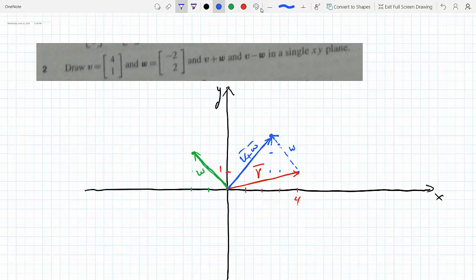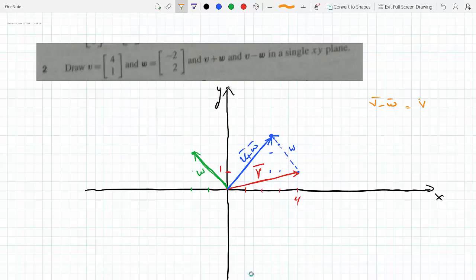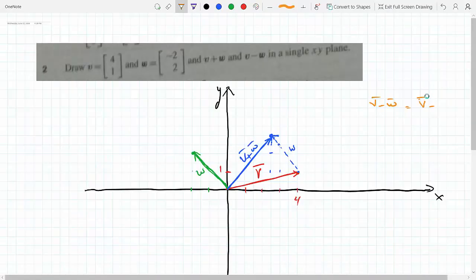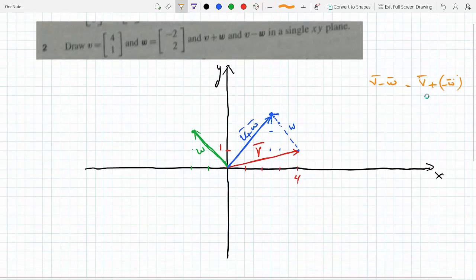There's no such thing as vector subtraction, but what I could do is change the subtraction to addition. So I would say V minus W is the same exact thing as V plus minus W. So instead of graphing W, I would do minus W.